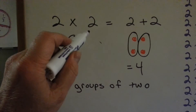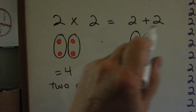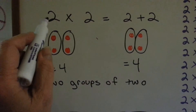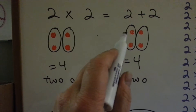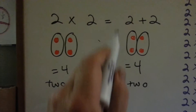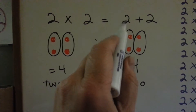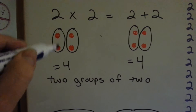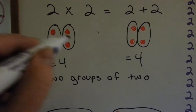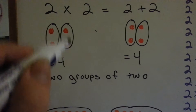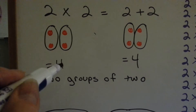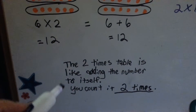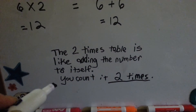2 times 2 is the same thing as 2 plus 2. Now that doesn't happen with every number — you can't say 6 times 6 is equal to 6 plus 6. It doesn't work that way. That's only because we're doing the 2 times table. That means you do the number 2 times, which is like adding the number to itself.